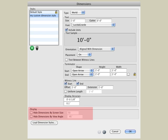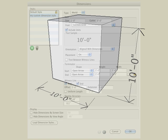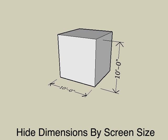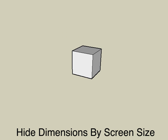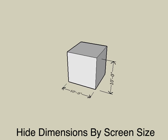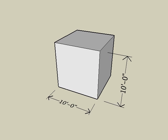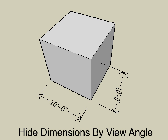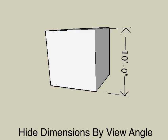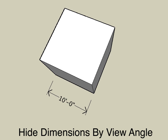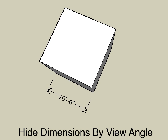The last two options determine when dimensions are temporarily dropped from the current display based on your zoom and viewing angles. With the hide dimension by screen size turned on, dimensions that become very small when zoomed out too far are hidden and become visible again as you zoom back in. With the hide dimension by view angle turned on, dimensions that become unreadable based on the view angle are hidden. As we change to more of a front view, the bottom dimension is now hidden. When we change to more of a top view, the bottom dimension becomes visible again and the vertical dimension is now hidden.